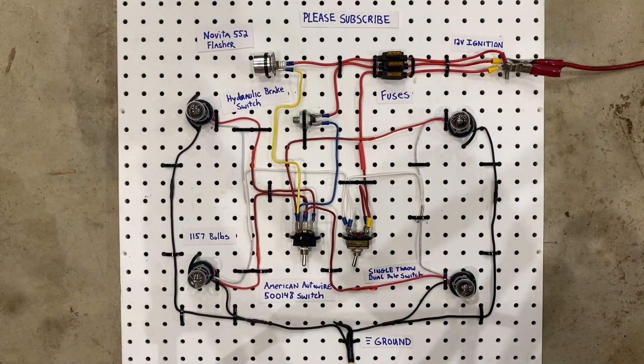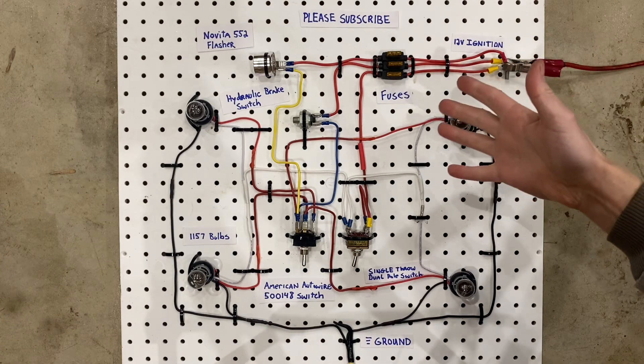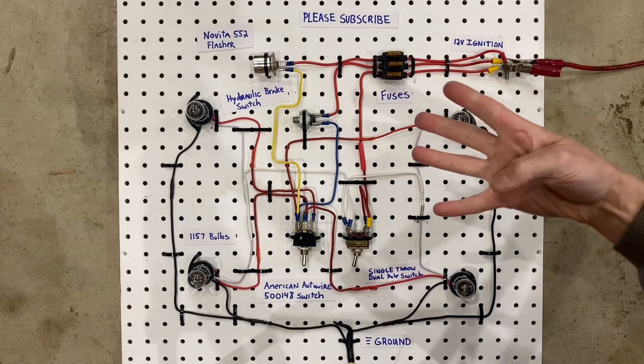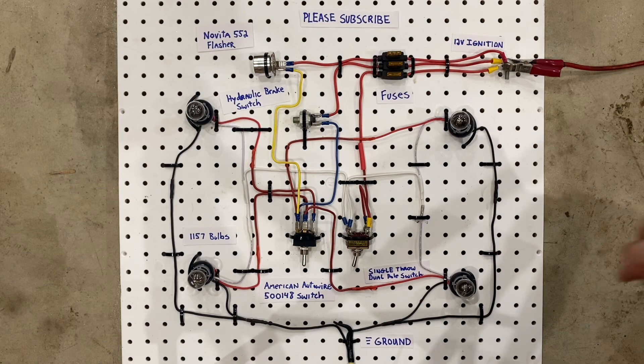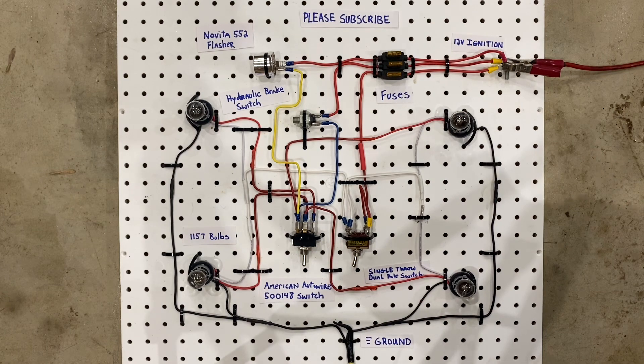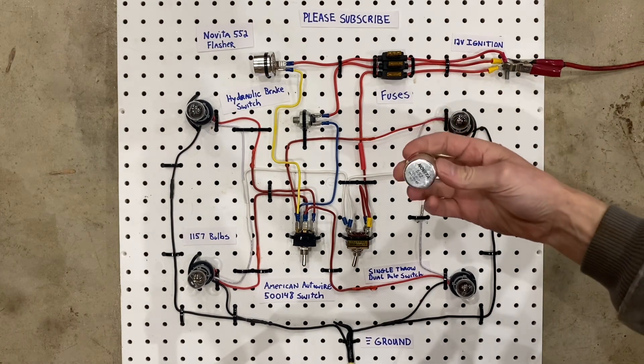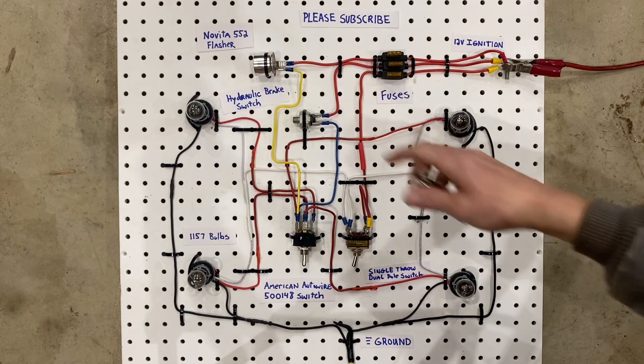Now you may be thinking, what happens if you want to add hazard lights to this as well? Then you have four functions with dual filament bulbs. Let me tell you, it's pretty easy to do. All you need is a second flasher, the same exact one as that.